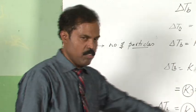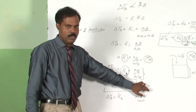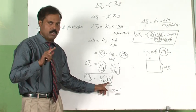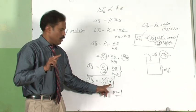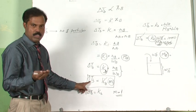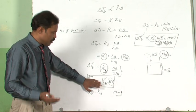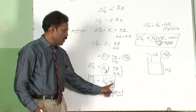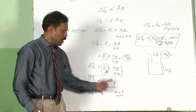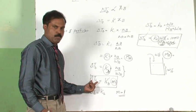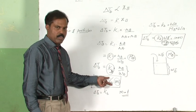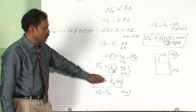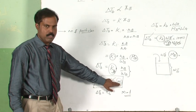It does not matter what substance we take — if molality is 1, the delta Tb has to be a certain value. Whatever substance you take, keep the molality at 1, delta Tb has to be the same, provided we take a particular solvent. What it means is delta Tb depends on the number of particles.